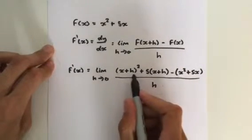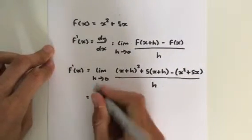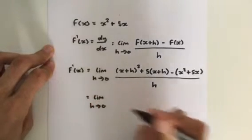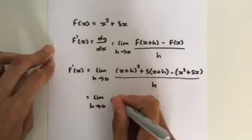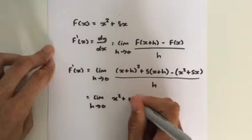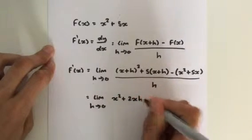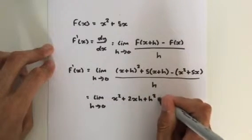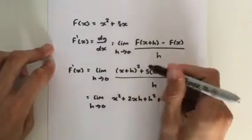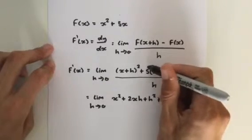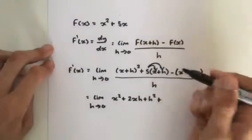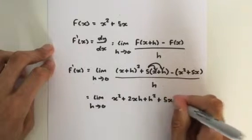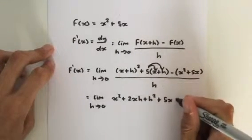So now we need to expand this binomial. We get that the limit as h approaches 0 of x squared plus 2xh. We did this in the last video. Plus h squared plus this one here. So we do 5 times x, then 5 times h. So we're going to get plus 5x plus 5h.